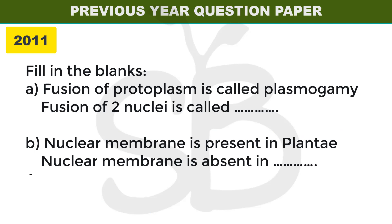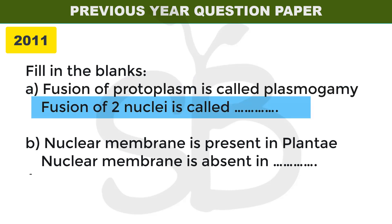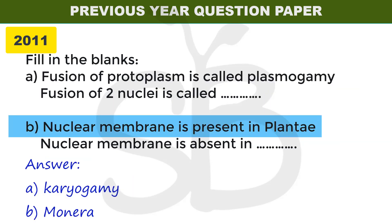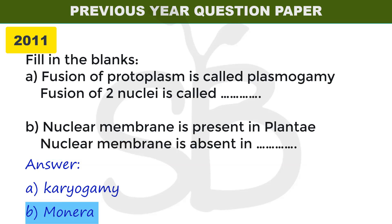2011 improvement exam: fill in the blanks. Fusion of protoplasm is called plasmogamy. Fusion of two nuclei is called dash — the answer is karyogamy, from 'karyo' meaning nucleus and 'gamy' meaning fusion. Nuclear membrane is present in Eukaryotes; nuclear membrane is absent in organisms of Kingdom Monera.